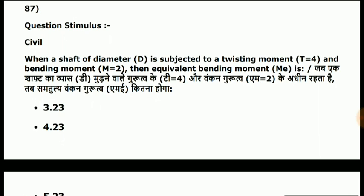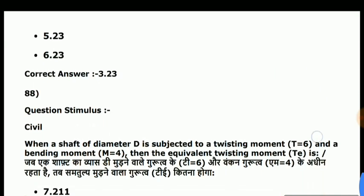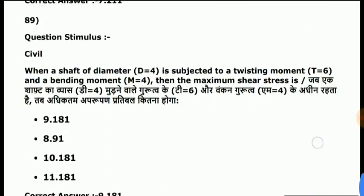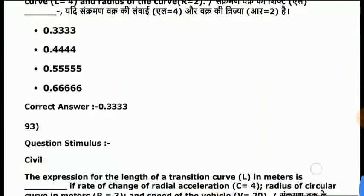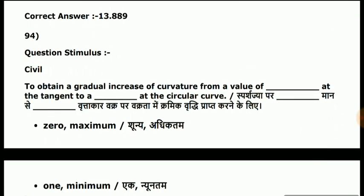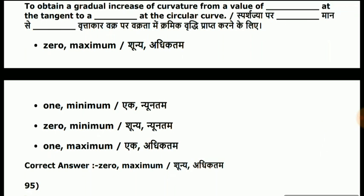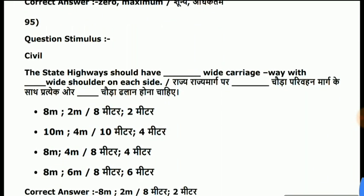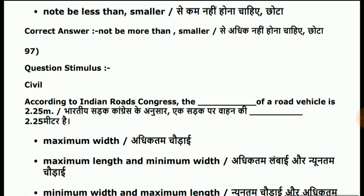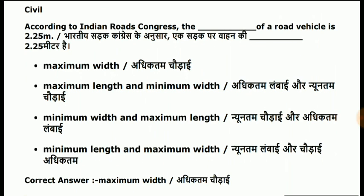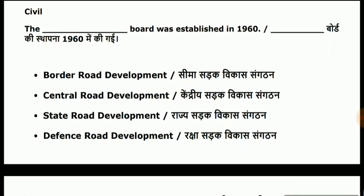Question 86: when a shaft of diameter d is subjected to a twisting moment T = 4 and bending moment M = 2, the equivalent bending moment Me is 3.23. To obtain a gradual increase of curvature from 0 to maximum, the state highway should have an 8-meter wide carriageway with 2-meter wide shoulder on each side. According to Indian Road Congress, the maximum width of a road vehicle — answer is maximum width.